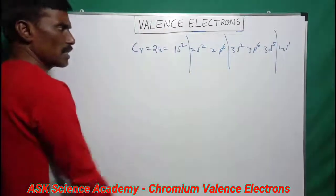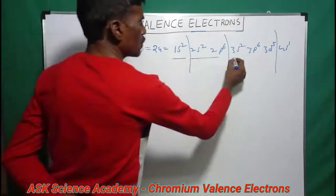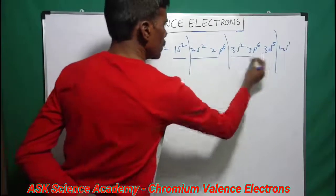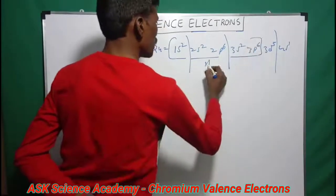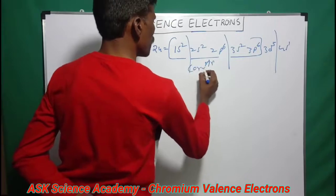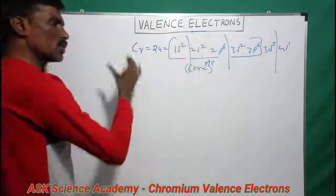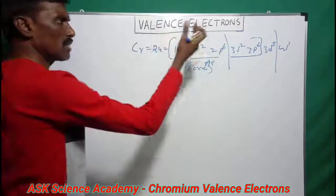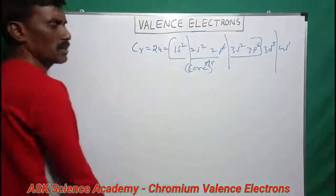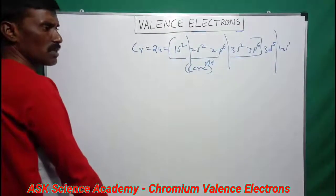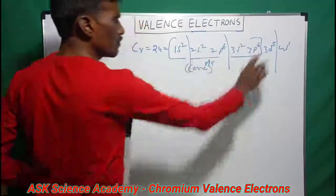To find the valence electrons: the first shell, second shell, and third shell — up to 3p⁶ — that configuration is called the argon configuration. This is the core configuration of this element. The inert gas configuration up to that point is the core configuration.